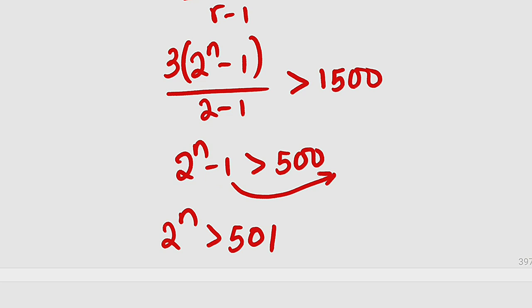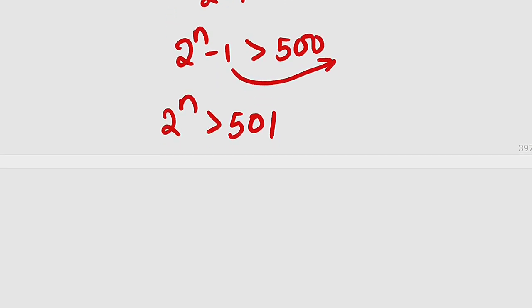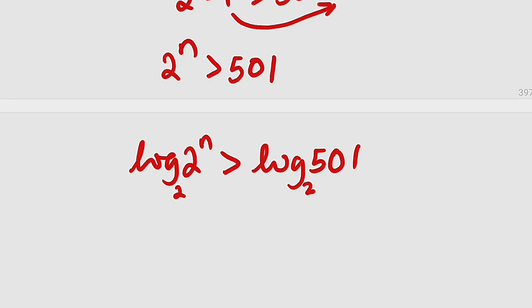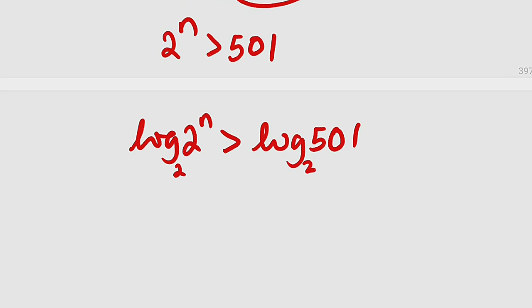Then from here we can take log on both sides. You take log of 2 to the power of n, equally do the same thing, log of 501. You should make it in base 2, just to clear this one—base 2. And according to one of the laws of logarithm, this number can drop down to multiply. So we have n multiplied by log 2 base 2, which is 1, so this is just greater than log of 501 base 2.